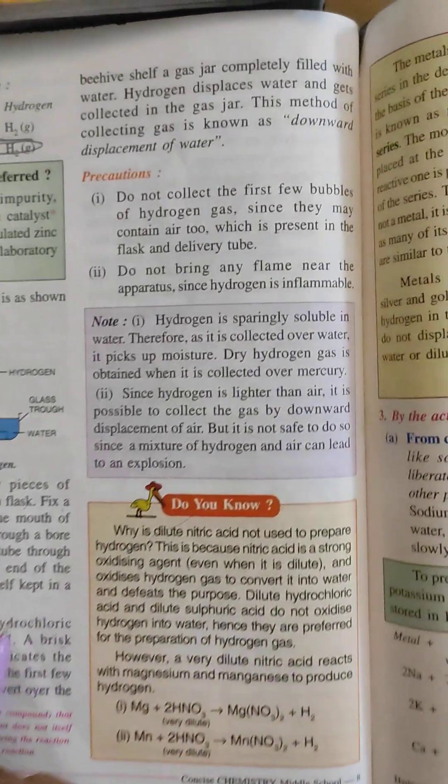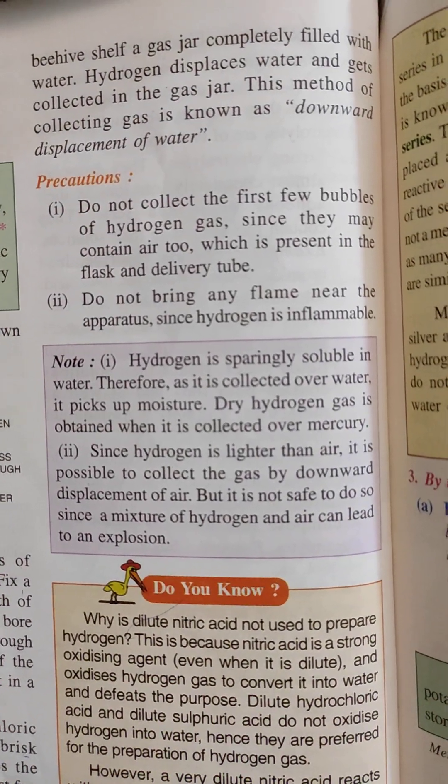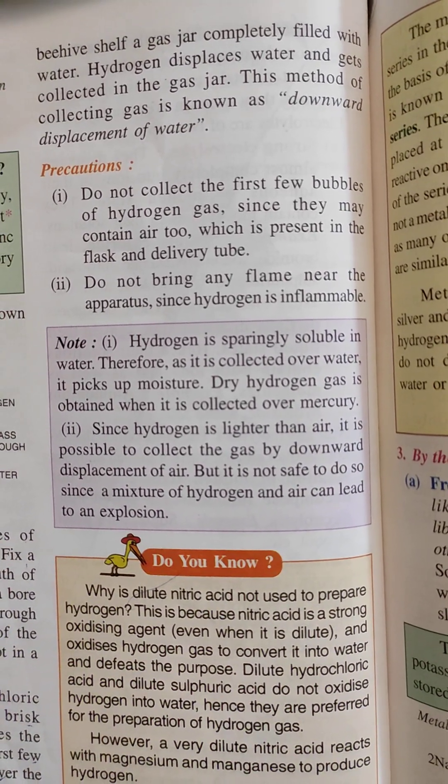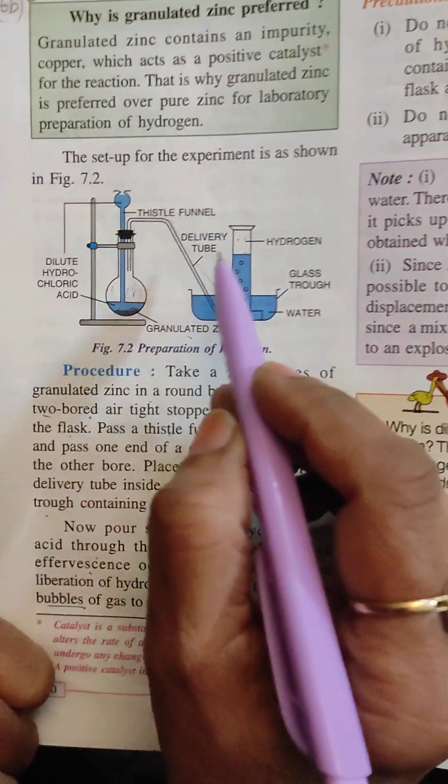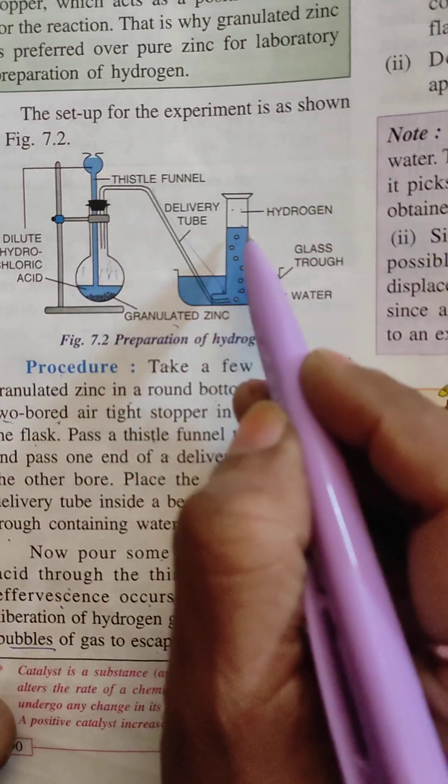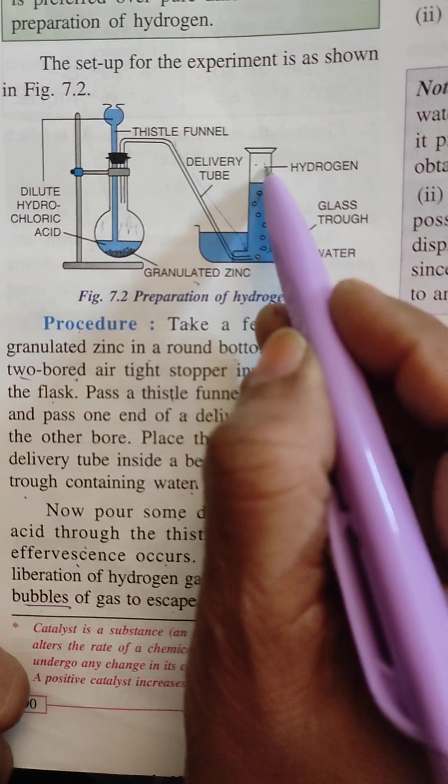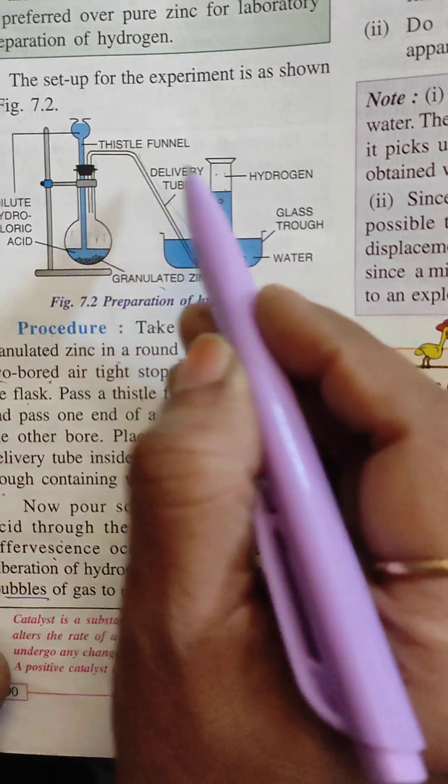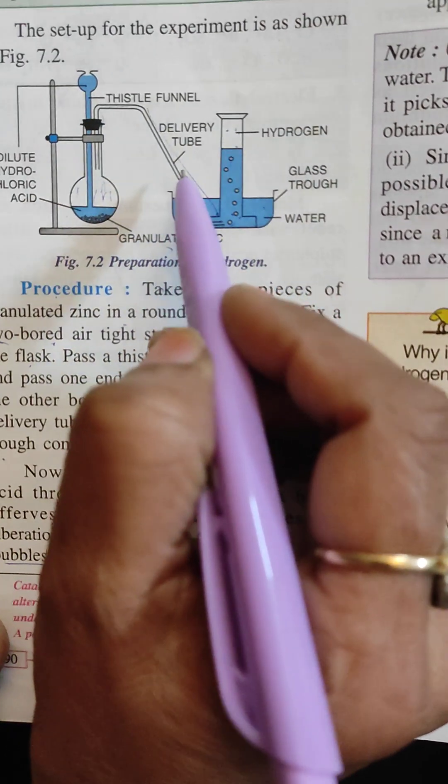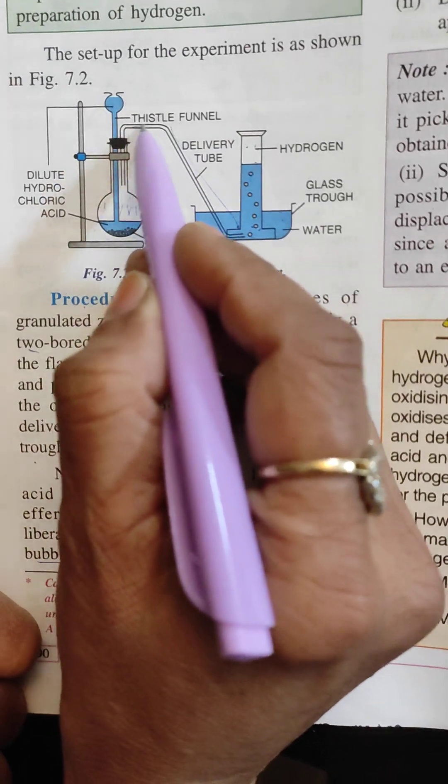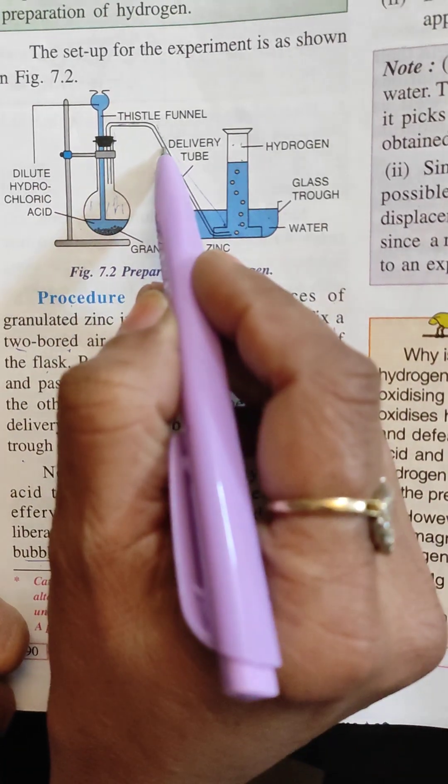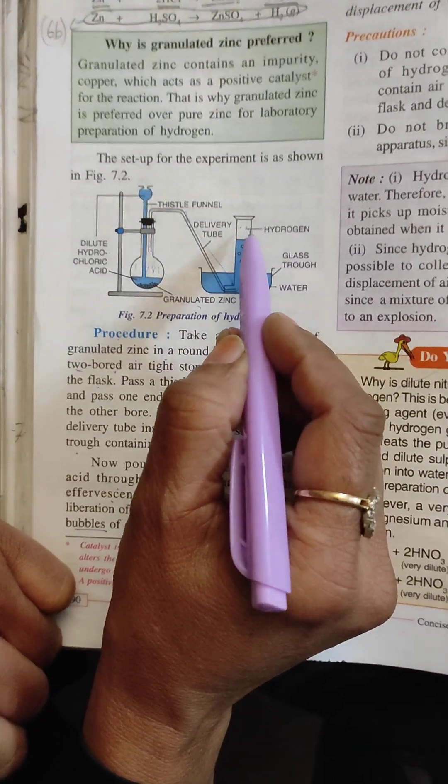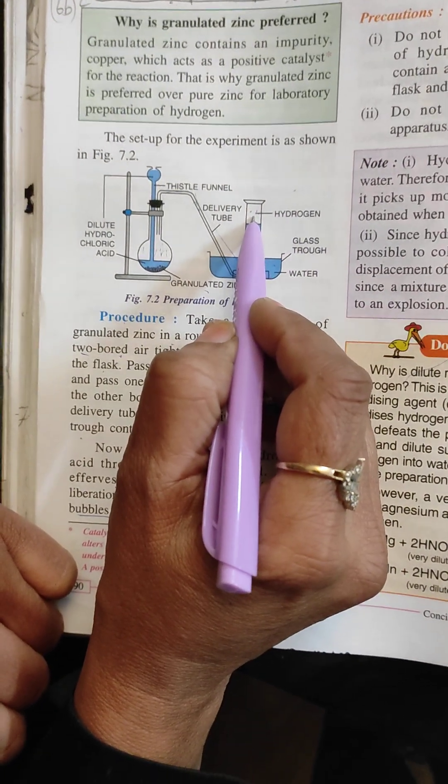Precautions kya hai? Of this experiment? Do not collect the first few bubbles of hydrogen gas since they may contain air too which is present in the flask and delivery tube. Let me explain this point first. So pehle kuch jo bubbles hain hydrogen gas ke, we don't have to collect them in this gas jar because they might contain the air. They definitely contain the air. Which air? Air which was present in the thistle funnel and in the delivery tube. That air can go and mix with this hydrogen gas. So first of all let the air escape from here and then invert the gas jar.